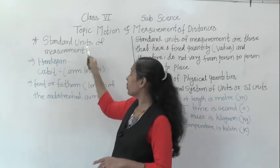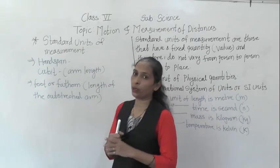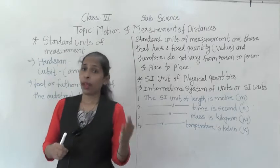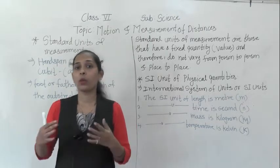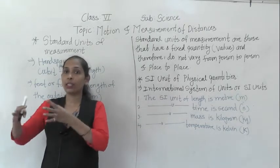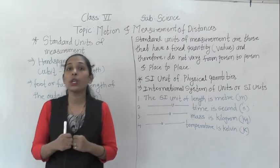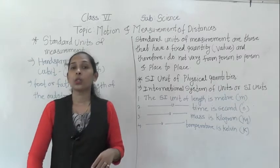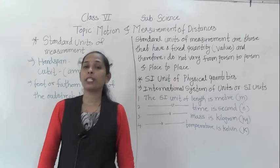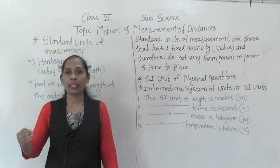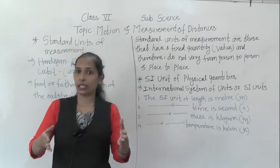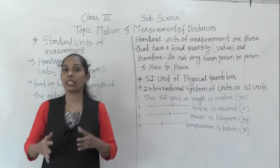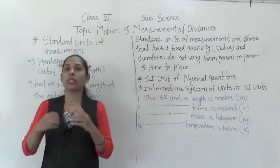The name of today's point is standard units of measurement. In ancient times there were no different types of standard units to measure different quantities. So how did people measure different things? In the ancient time, people were using their body parts to measure different things or different physical quantities.